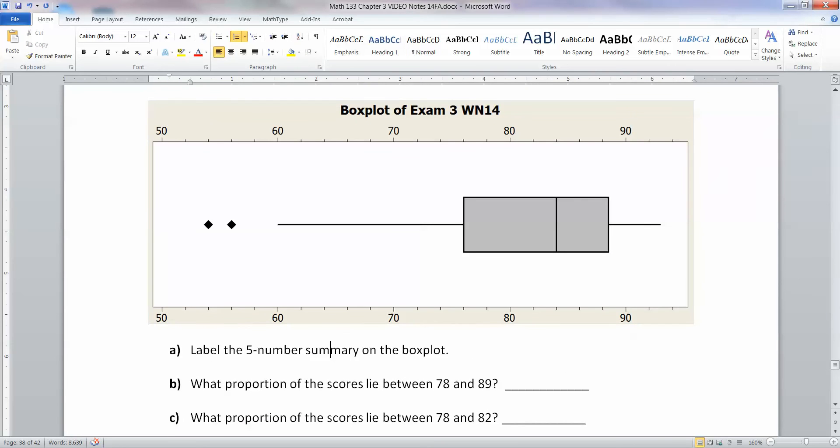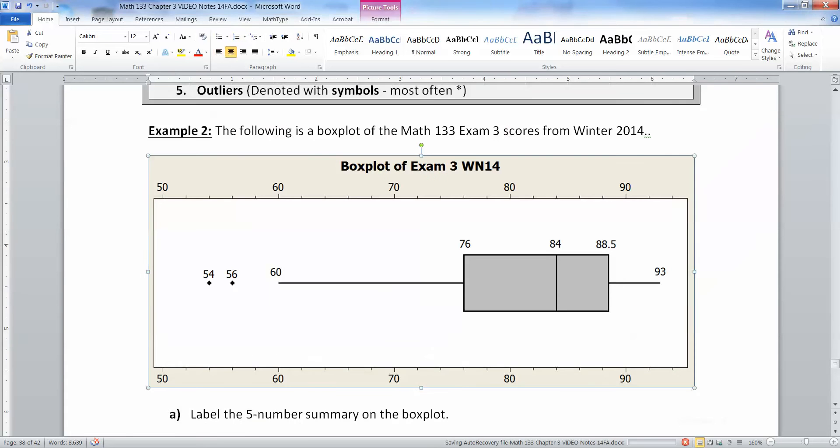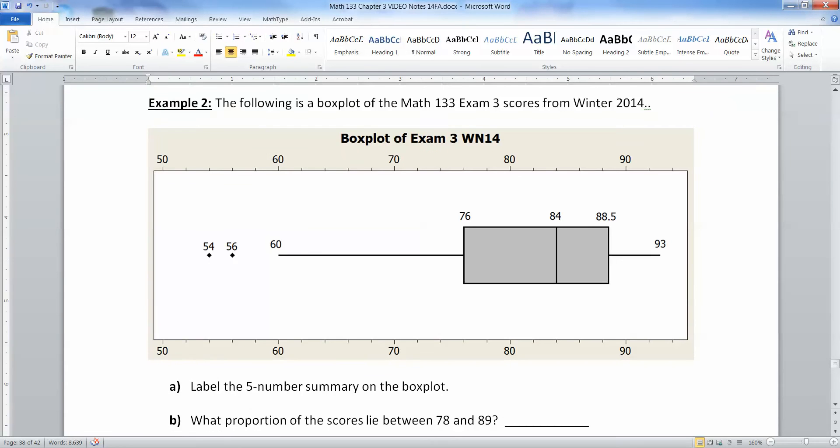So I'm going to label the five numbers on that box plot. Let me write in those numbers. There we go. So I've labeled all the parts of the box plot so you can see them. So there's 54, which is technically the min. And I actually did a little bit more because I said just to label the five number summary, but I'm actually labeling a little bit more so you can see what's going on here. There's 56, which is the other outlier. And 57.5 is somewhere in here, and that's the fence. But you don't have the whisker go down to the fence. You have the whisker go to the number that's above the fence, which is 60. There's 76, which is Q1, 84, which is the median, 88.5, which is Q3, and 93 is the max.